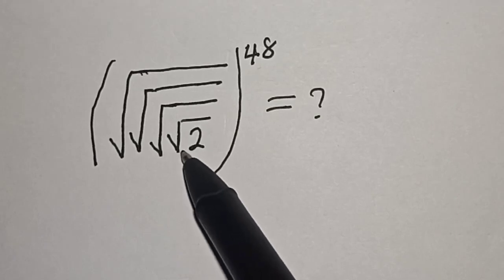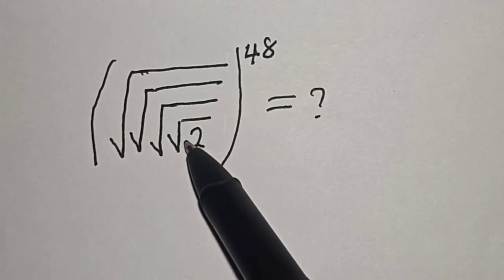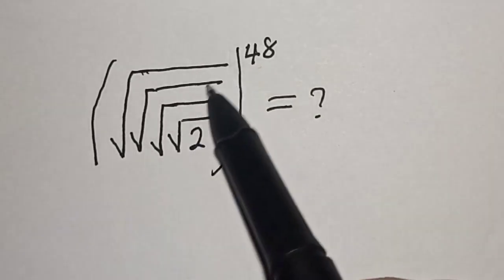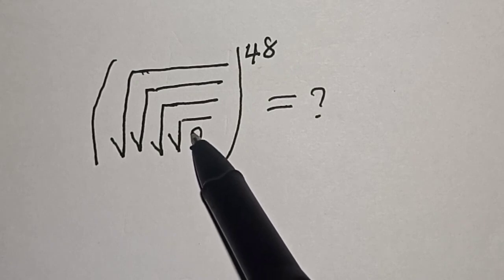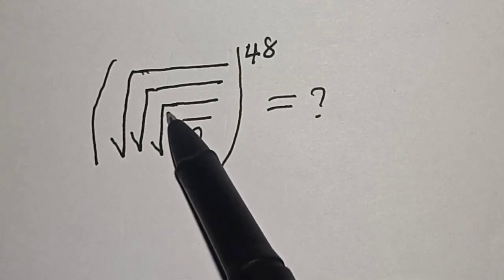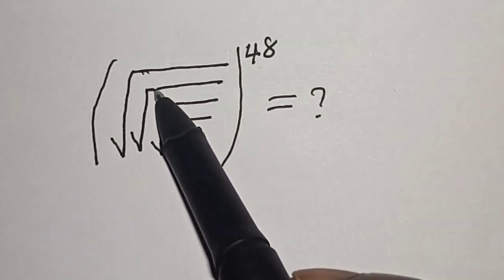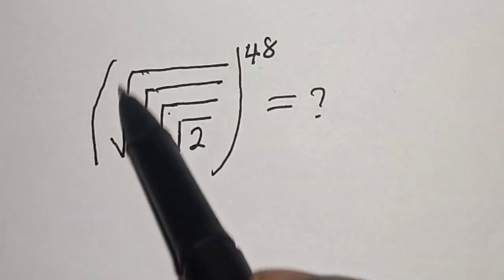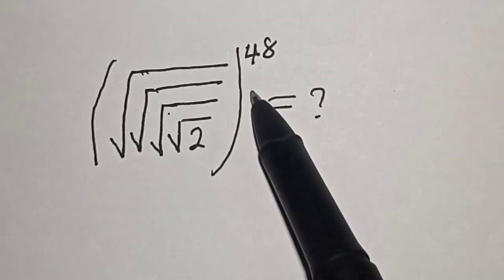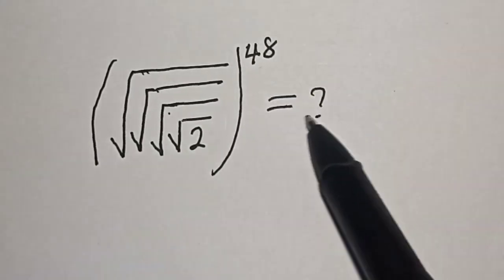Hello, welcome to MathGIS. In this class, we quickly want to evaluate this math problem: square root of 2, square root, square root and another square root, all raised to power 48 is equal to 4.